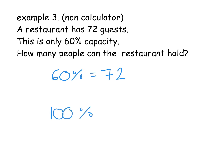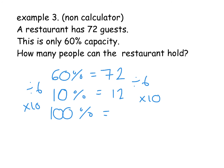So 60% equals 72 is your starting sum, and you're looking to get to 100%. Without a calculator, I don't particularly want to find 1% by doing 72 divided by 60 — but I can spot that it divides nicely by 6. So sometimes without a calculator it's easier to find 10%. To go from 60 to 10, I'm dividing by 6. So I divide 72 by 6, which is 12. Then to go from 10 to 100 you're timesing by 10, so 12 times 10 means the restaurant can hold 120 people. A quick check: 40% of 120 is 48, and 120 take away 48 is 72. You can always do a little check at the end.